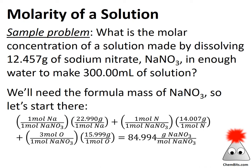The first thing we need is the formula mass for sodium nitrate. Pulling numbers off the periodic table: one sodium at 22.99, one nitrogen at 14.007, and three oxygens at 15.999 each. So our formula mass is 84.994 grams per mole. Always make sure you're watching your units — all of these cancel, leaving us with grams per mole of sodium nitrate.